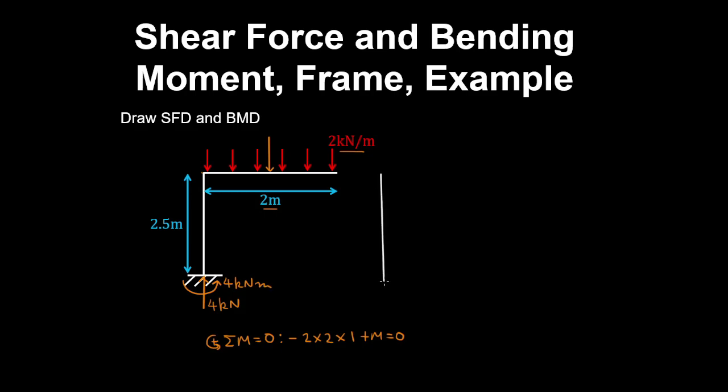We'll first draw the shear force diagram. If we cut the column from bottom to top, we can see there's no horizontal reaction acting on this segment. So the shear force in the column is all 0.